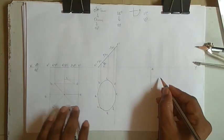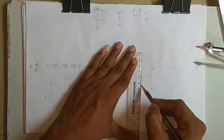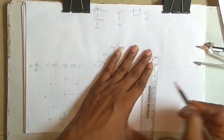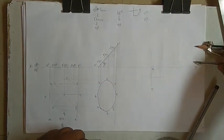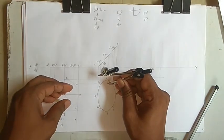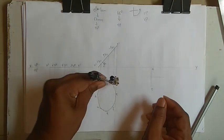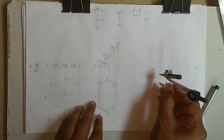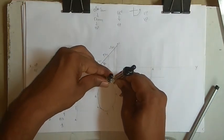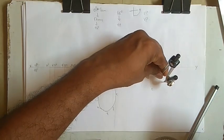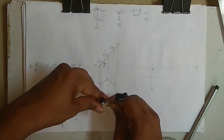Mark 17mm here and drop parallel lines. From this point, locate point B and point D — measure both. From this point, B is here, and from this point, D is here.